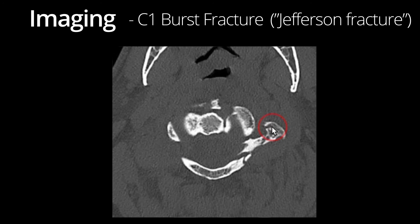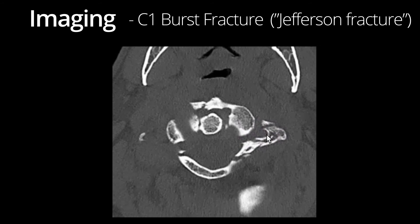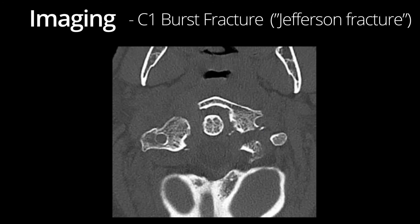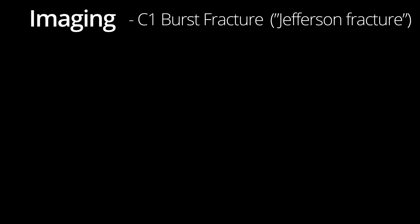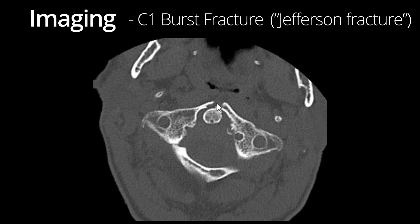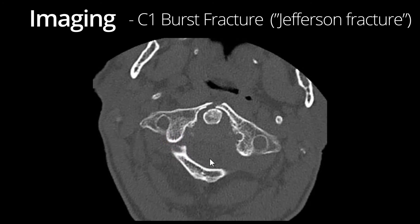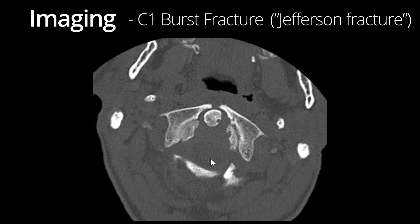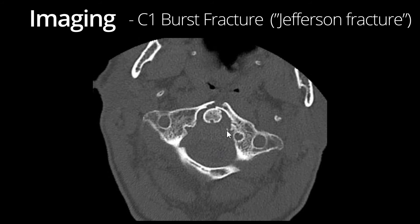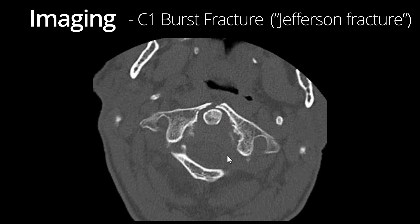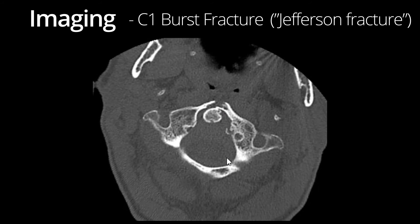Also notice the extension of the fracture into the left transverse foramen, which is important to recognize and likely warrants a CTA given the vertebral artery courses through this foramen. Here is another Jefferson fracture with fracture of the anterior arch centrally and fracture of the right posterior arch. Additionally, there is a mildly displaced fracture fragment from the medial aspect of the left lateral mass of C1 at the site of the transverse ligament attachment, concerning for an avulsion injury of the transverse ligament.